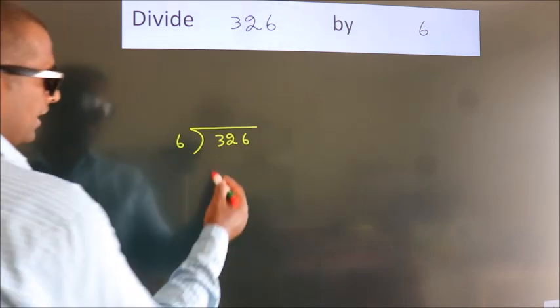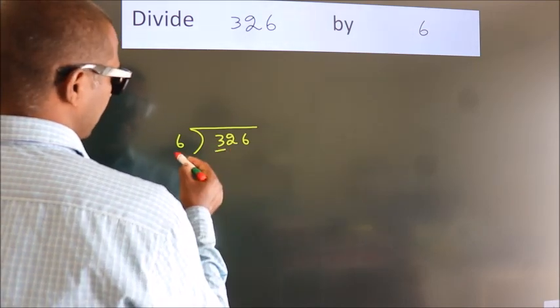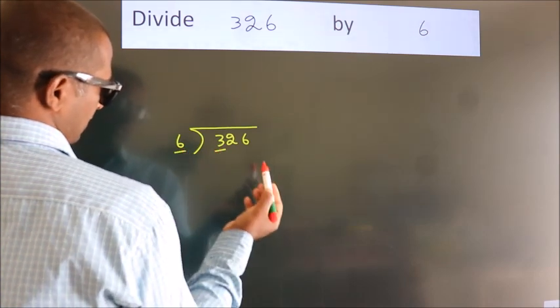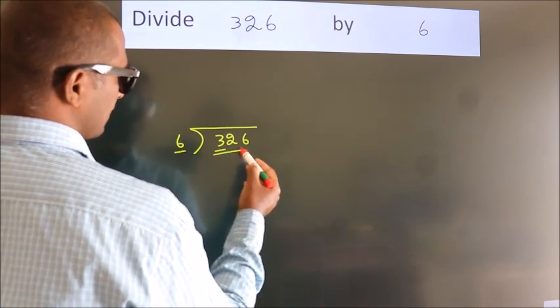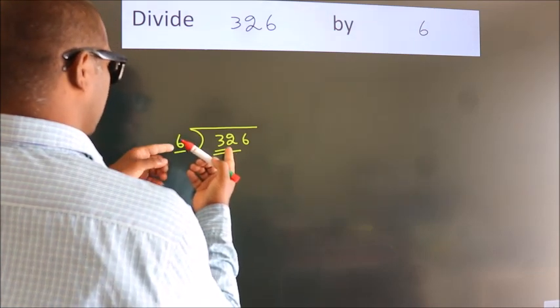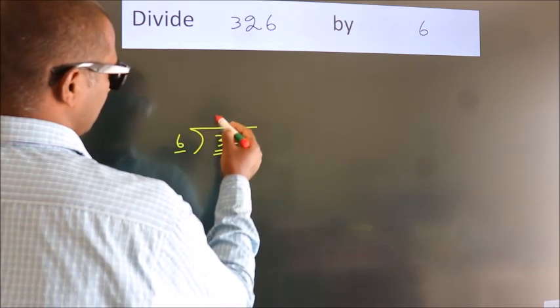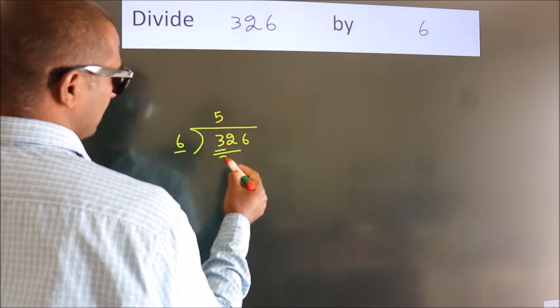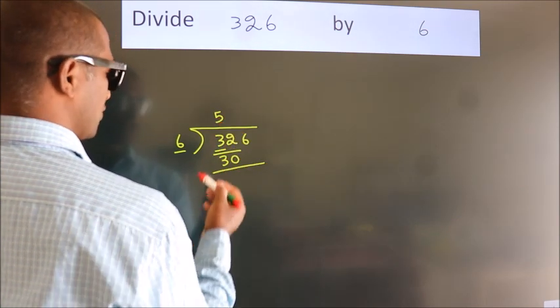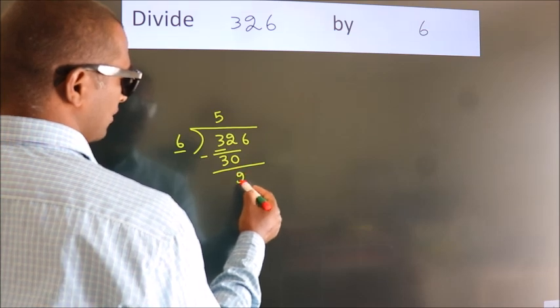Next, here we have 3. Here 6. 3 is smaller than 6, so we should take 2 numbers, 32. A number close to 32 in the sixth table is 6 fives, 30. Now we should subtract. We get 2.